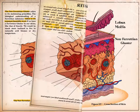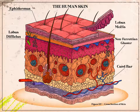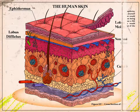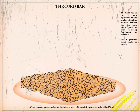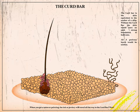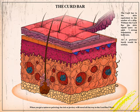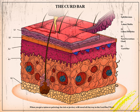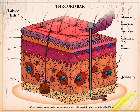Further down we have the curd bar, a gummy goo-like layer responsible for rooting your hair and nerve blendings to the Gershwin Wall. When you get a tattoo or a piercing, the ink or jewelry will travel all the way to the curd bar.